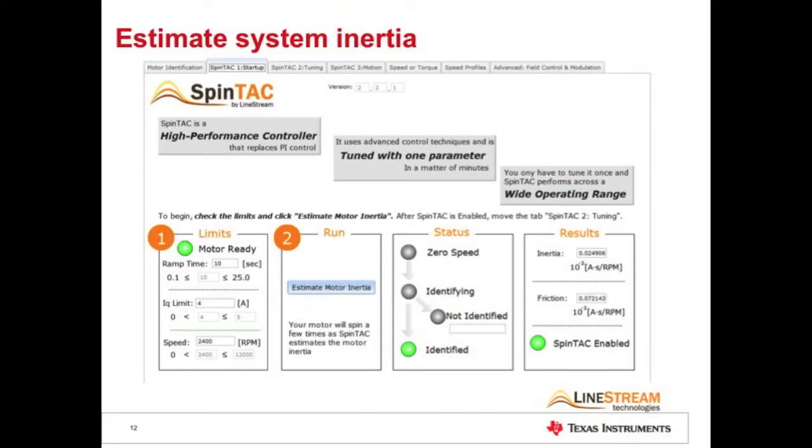The next step is to identify the system inertia. We've got to make sure that the motor is connected to anything that will spin with it during operation. In the washing machine, that's the drum. This process is typically done once at design time and is completed in less than a minute.